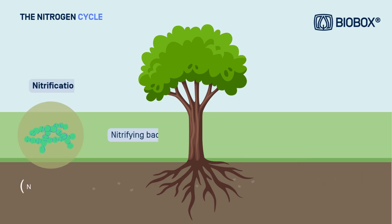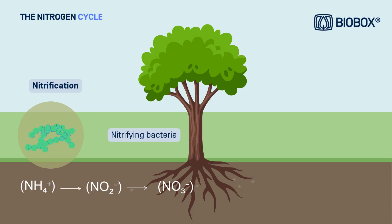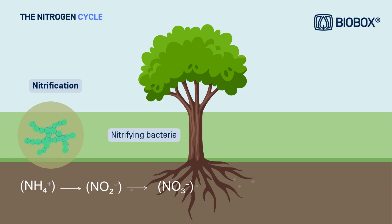Once organic nitrogen has been transformed into ammonium through mineralization, a key process comes into play to complete the cycle in the soil: nitrification. This process transforms ammonium into nitrate. First, bacteria from the Nitrobacter genus transform that nitrite into nitrate.